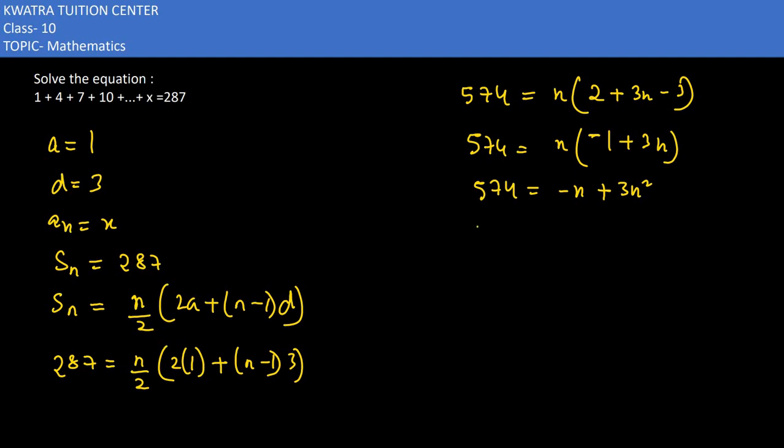So it will result into 3n square minus n minus 574 equals 0, which is a quadratic equation because the degree is 2 here. A quadratic equation we can solve using the quadratic formula.